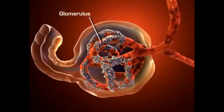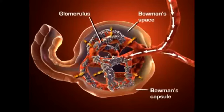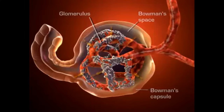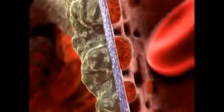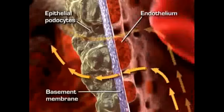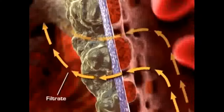The glomerulus is encased in a thin double-walled capsule called Bowman's capsule. The space inside the capsule surrounding the glomerulus is called Bowman's space. Plasma-like fluid is filtered from the capillary blood into Bowman's space through the glomerular filtration membrane. This membrane consists of three layers of capillary wall: the endothelium, the basement membrane, and the epithelium. It allows some particles from the blood to pass through, but not all. The fluid filtered into Bowman's space is called filtrate and forms the primary urine.